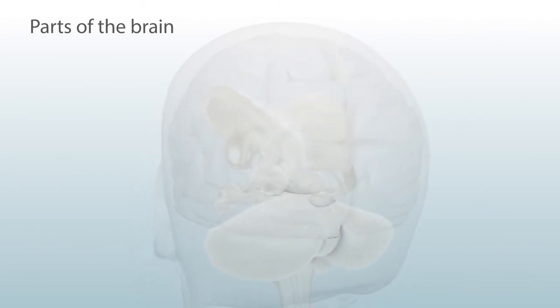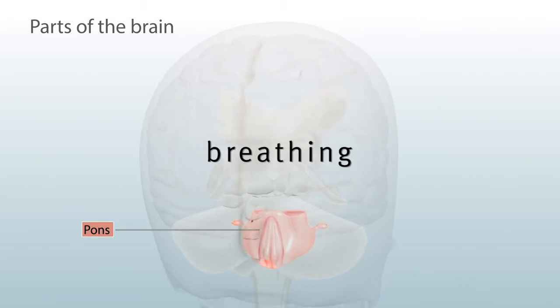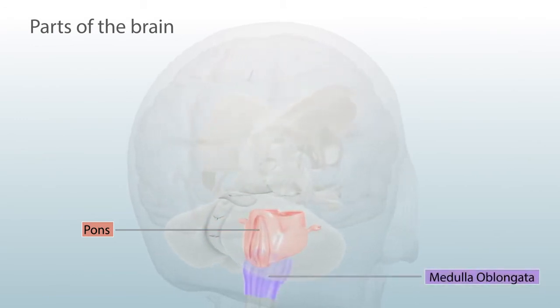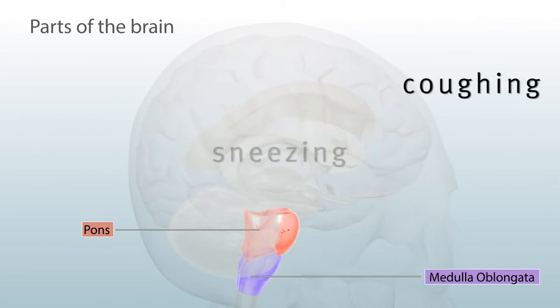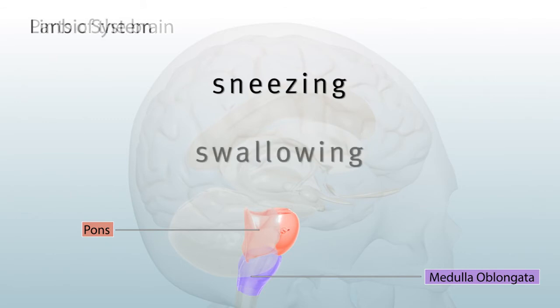The brain stem includes the pons, which helps control our breathing, and the medulla oblongata, which regulates our heart and other body reflexes like vomiting, coughing, sneezing, and swallowing.